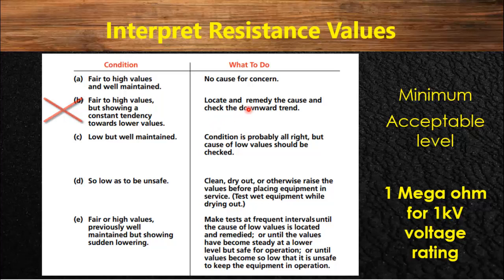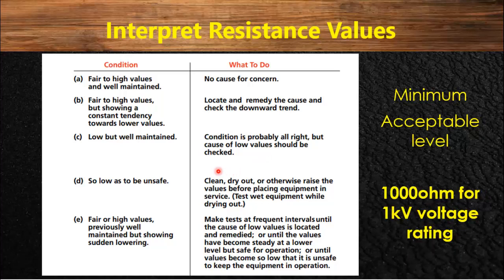If the equipment previously showed fair to higher resistance values but now shows a constant downward trend of lower resistance values, it means the equipment is still in good condition but you need to investigate the reason for the downward trend. Similarly, if the megger values are above the minimum acceptance level but are very low and well maintained over time, the insulation is in good condition but you should look out for the cause of the low values. This is how you interpret the resistance values read from the megger.